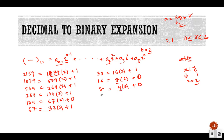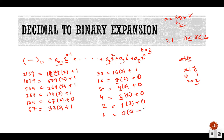Continuing: 8 = 4 * 2 + 0. Then 4 = 2 * 2 + 0. Then 2 = 1 * 2 + 0. Finally 1 = 0 * 2 + 1. We stop here because our quotient q equals 0.